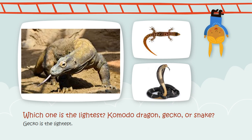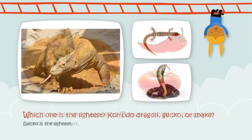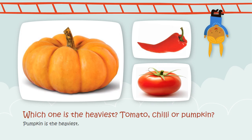Now, let's see these three animals: Komodo dragon, gecko, and snake. Which one is the lightest? Well, you're right. Gecko is the lightest. How about this? Pumpkin, chili, and tomato. Which one is the heaviest? It's true. Pumpkin is the heaviest.